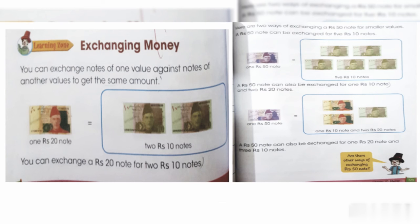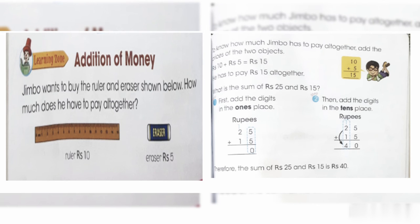When we exchange money, we also do addition of money. Jamboo wants to buy a ruler and a razor. How much does he have to pay altogether? The ruler costs 10 rupees and the razor costs 5 rupees. We add them: 10 plus 5 equals 15. Jamboo has to pay 15 rupees altogether.